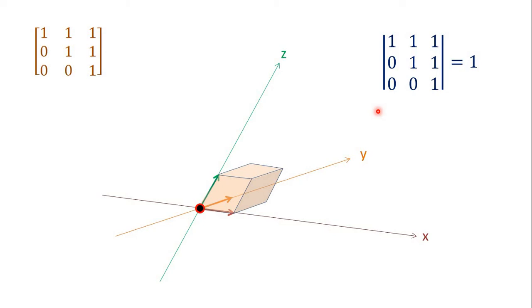In conclusion, the determinant is the value which represents by how many times the volume in 3D space gets scaled after transformation.